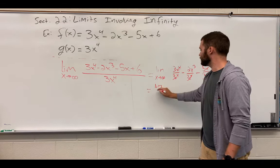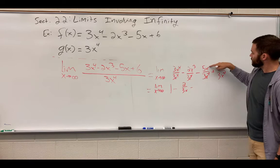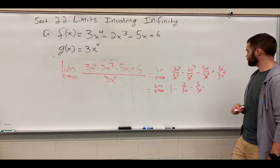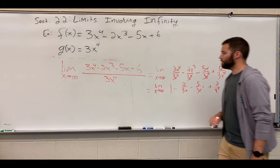All right? And, now, we simplify. This is going to be just 1. So, I'm going to work down now. This will be 1 minus, this will end up being 2 over 3x. This will be 5 over 3x to the third. And, this will end up just being 2 over x to the fourth.